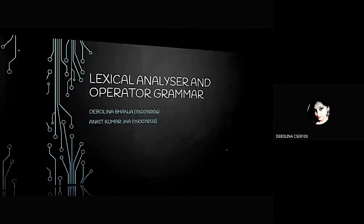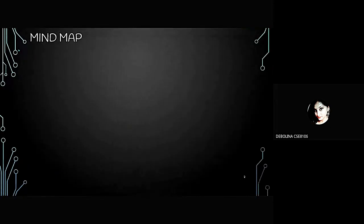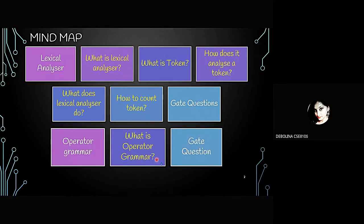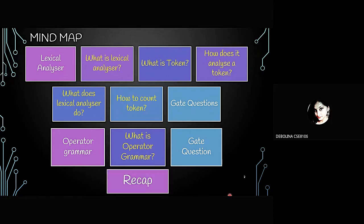Let's begin with the mind map so we know how the presentation will go. First, we will cover what is a lexical analyzer, then what is a token, then how to analyze a token in a lexical analyzer, why we use it, and how to find tokens. Then we will move to gate-level questions. Next, we cover operator grammar — what it is — followed by gate-level questions on that topic. At the end, we will do a recap of both.